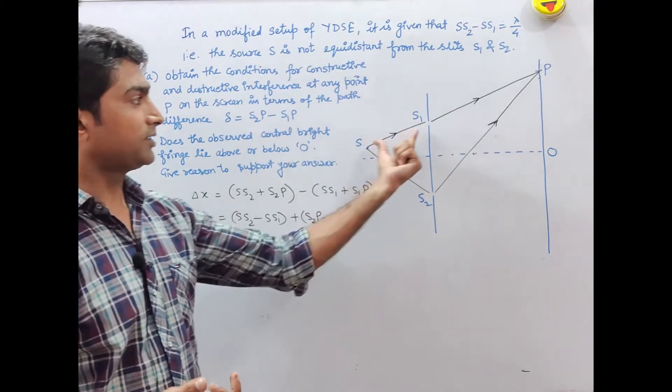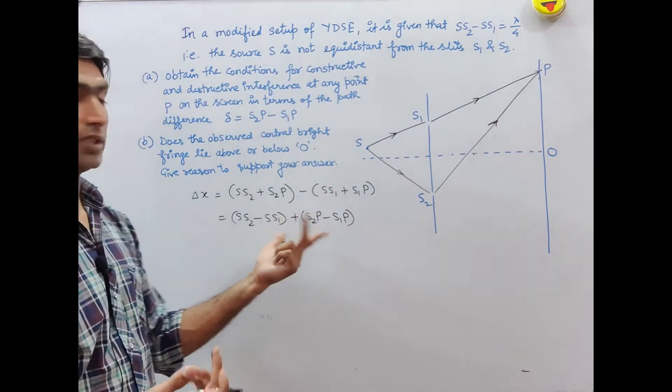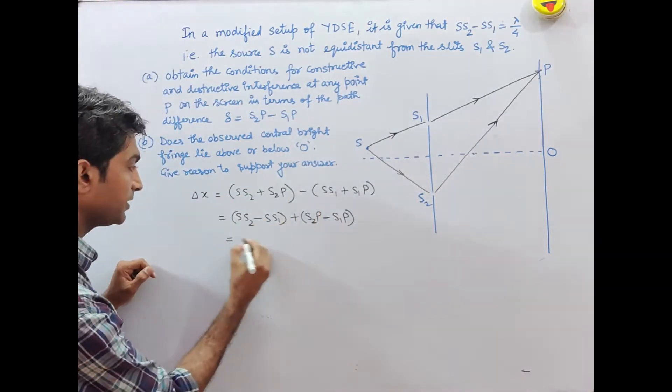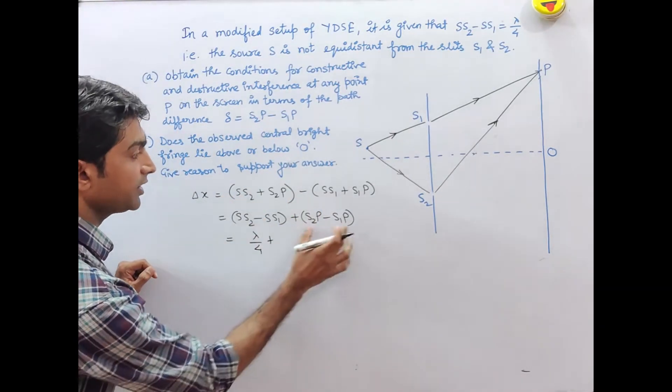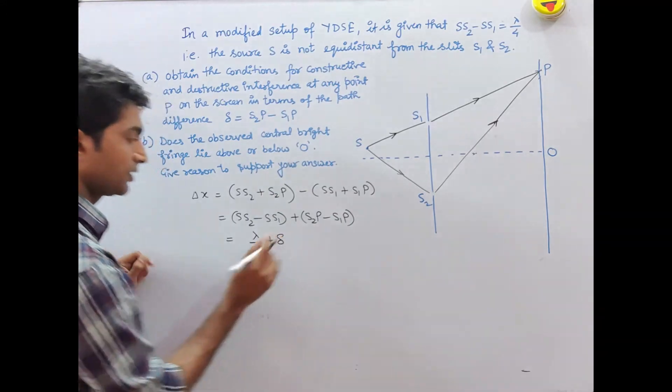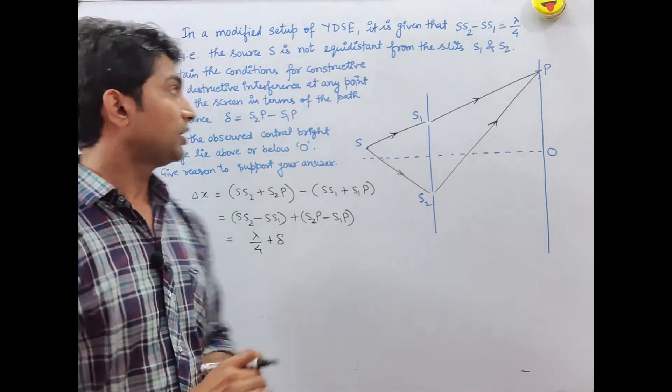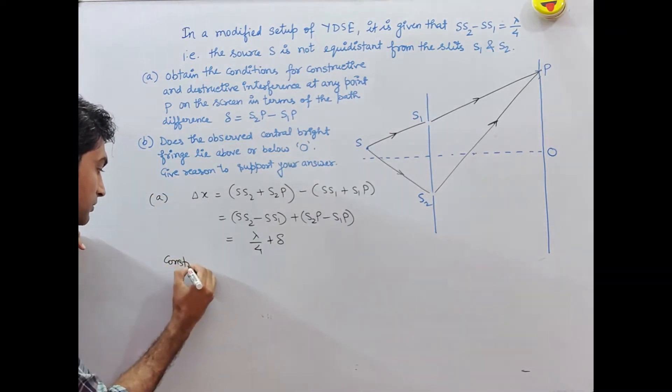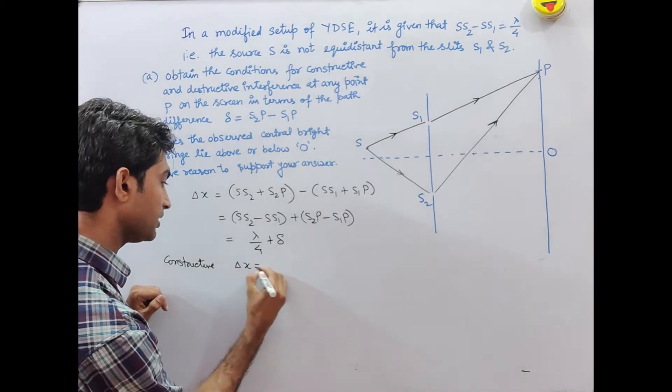For the given path difference and point P, we need to determine the conditions. So delta X equals n lambda.